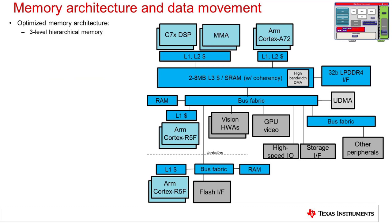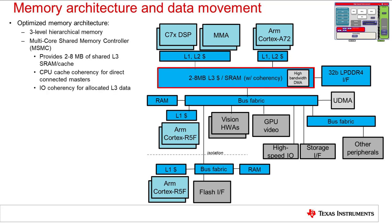Jacinto 7 supports a multi-level memory system in which most CPUs have one or two levels of caches, and in some cases, such as the R5 cores, some additional low latency local RAM memories. The multi-core shared memory controller, or MSMC, provides access to a third level of system cache or RAM. Depending on the device derivative, this L3 RAM or cache may be up to 8 MB in size, available to be shared across cores in a coherent manner.